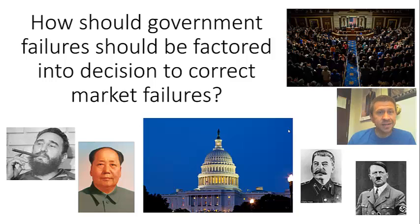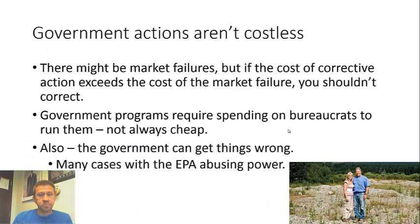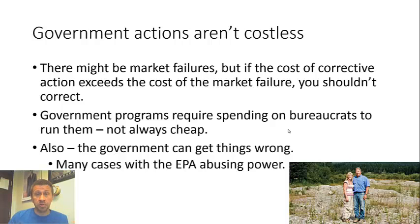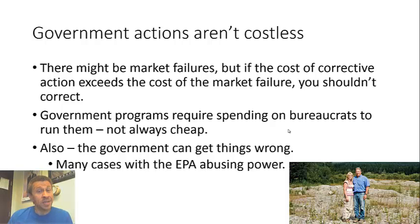Before we correct for a market failure, we need to understand government failure — and when should we think about using the government, knowing they can screw things up terribly, in order to correct a market failure. Government actions aren't costless. Just because you have a market failure, it doesn't mean you should automatically correct it, because getting the government involved is going to cost money — it's going to require spending on bureaucrats to administer something. In order to do it well, the government has to get it right. Perhaps you have an externality; to fix it, the government's got to know exactly the right thing to do, and they may not always have that right information. They could actually make things worse, on top of the fact that it is expensive to administer a government program.